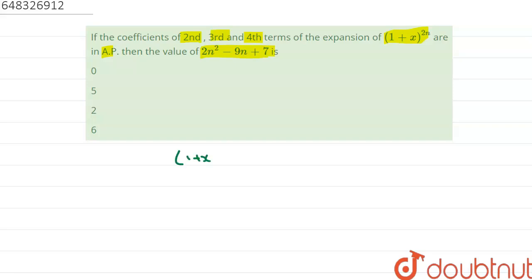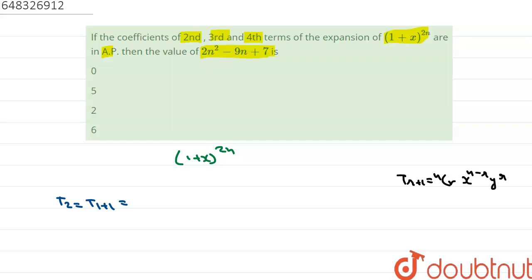First of all, the given expansion is (1+x)^(2n). We will find the second, third and fourth terms. The formula for the general term is: T(r+1) = nCr · x^(n-r) · y^r. In our case, n is equal to 2n, x equals 1, and y equals x.